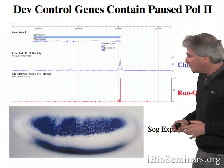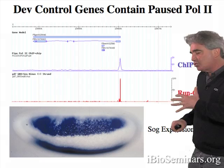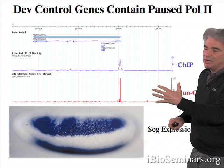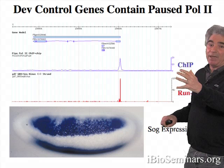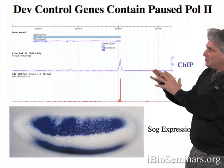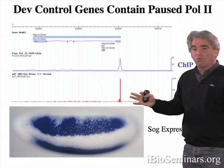This situation is not just true for SOG, but most of the genes that control embryonic development show paused polymerase prior to their activation. These would include HOX genes and genes encoding different signaling pathways, such as Notch, Wnt, and Hedgehog signaling. These types of genes tend to contain paused polymerase in the Drosophila embryo. The question is: why? What does paused polymerase do for gene activation?